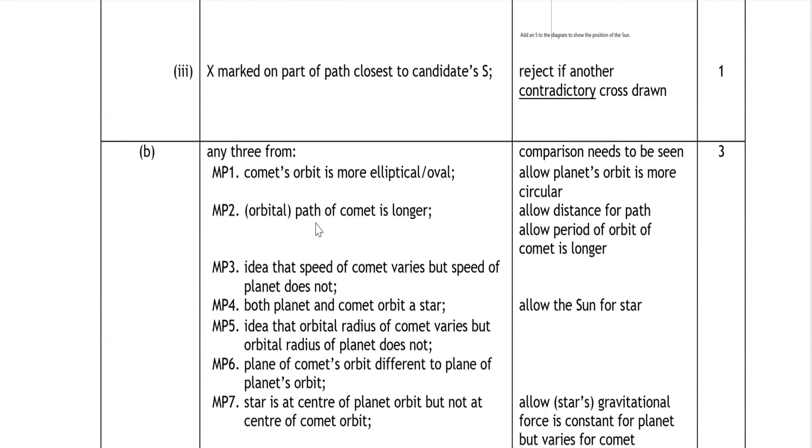A comet's orbit is more elliptical or oval, while planet's orbit is more circular. Orbital path of the comet is longer, so that means elongated orbit. The speed of the comet varies, but speed of the planet does not.